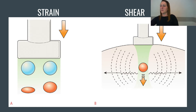Strain, also known as quasi-static, was the original type of elastography developed. Elastography has now been expanded to include shear wave elastography. As you can see in the image, strain compares the before and after effects of tissue compression, while shear watches how the sounds react to the compression or vibration of a structure.